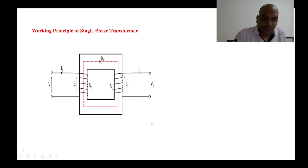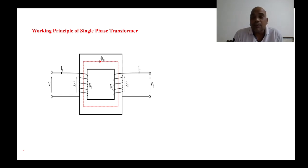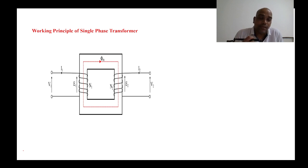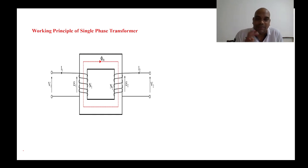In this class we will discuss the working principle of a transformer. Previously we discussed the working principle of DC generators, DC motors, and synchronous generators. In all those machines, there are two windings: one is the field winding and another is the armature winding. But in a transformer, we also use two windings — one is the primary winding and the other is the secondary winding.